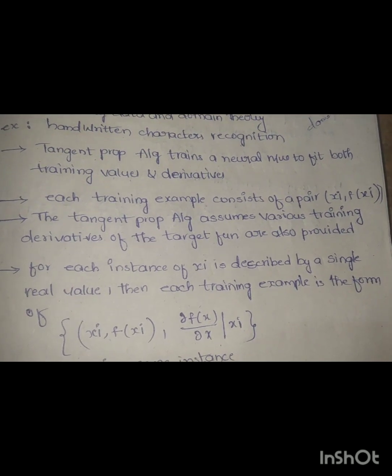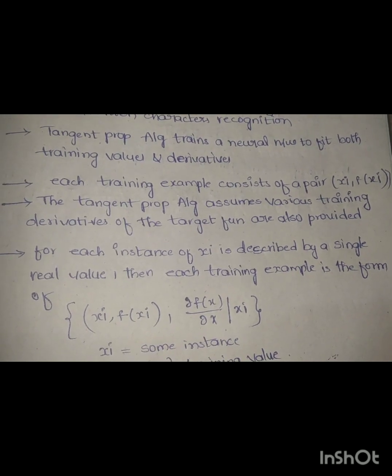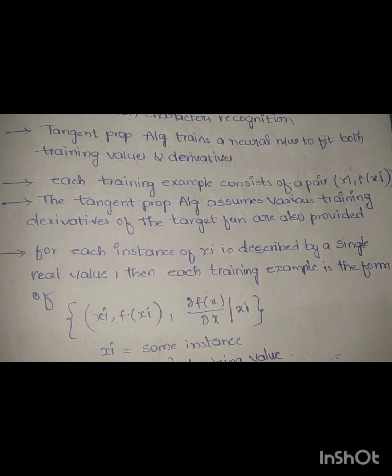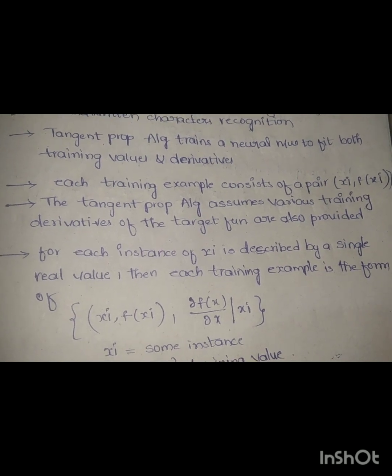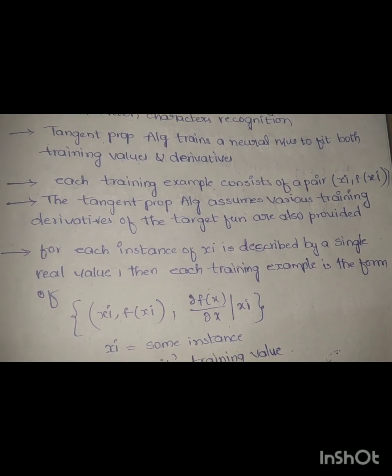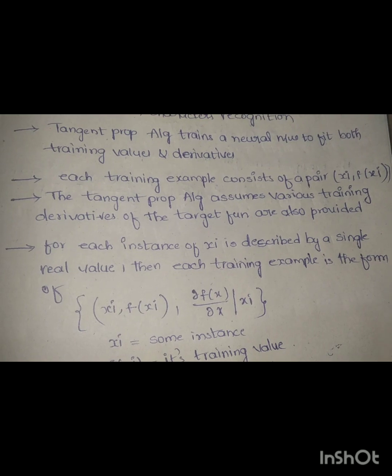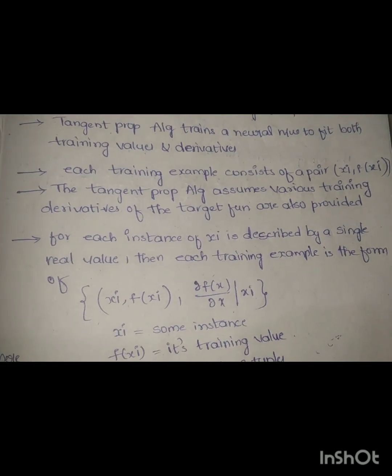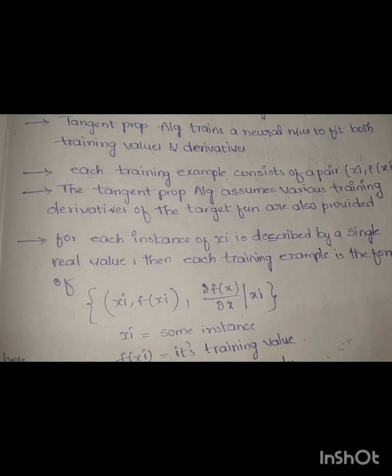of the target function are also provided. For each instance xi is described by a single real value. Each training example is in the form of xi and f of xi, where xi is the instance, f of xi is the training value, and delta f of xi by delta xi